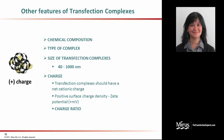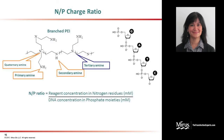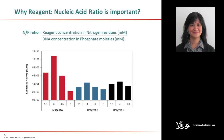Another parameter related to charge is the charge ratio of the transfection complexes. This charge ratio is essentially the molar ratio of the positively charged moieties on a transfection reagent that complex with the negatively charged phosphate moieties of the DNA backbone. This is often referred to by gene delivery specialists as the N/P charge ratio, or just N/P ratio. Here is an example of a branched PEI molecule that offers several amine groups to complex with the backbone of DNA. In this case, the charge ratio would be the molar ratio of all the amine groups available to the phosphate groups on the DNA.